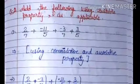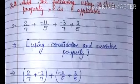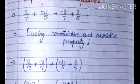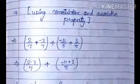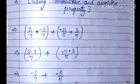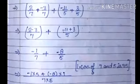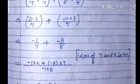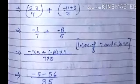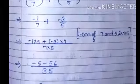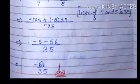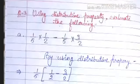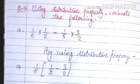Question number two: add the following using a suitable property. The first question is two upon seven plus minus eleven upon five plus minus three upon seven plus three upon five. By using commutative and associative property, we can write it as (two upon seven plus minus three upon seven) plus (minus eleven upon five plus three upon five). By solving, we get minus one upon seven plus minus eight upon five. Taking LCM of seven and five as thirty-five, we finally get minus sixty one upon thirty five.